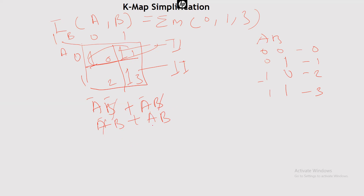So our final solution will be Ā (from group 1, since B cancels) plus B (from group 2, since A cancels). So the final simplified expression is Ā + B.